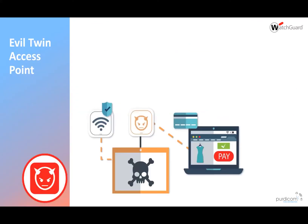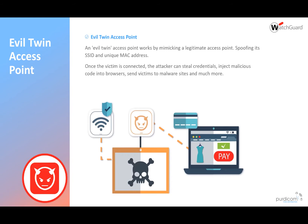The first one — evil twin access points — is probably one of the worst and most common out there. Hackers use pineapples or devices running Linux to mimic the same SSID that you're actually transmitting. They also use the same MAC address to fool the system, so victims — the clients — are confused about which SSID to connect to. Because the evil twin's signal is stronger, clients will jump onto that.